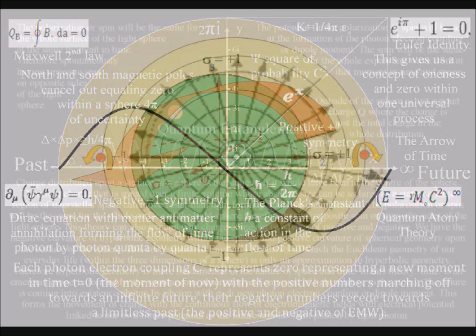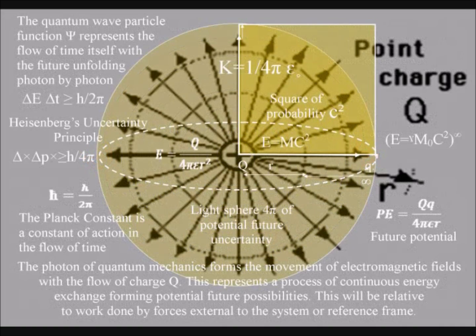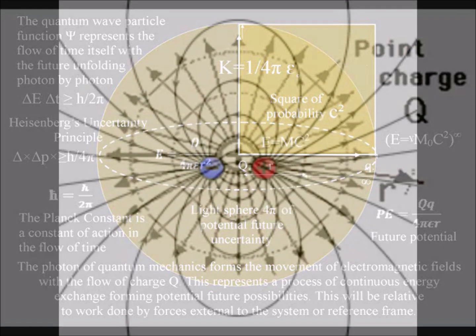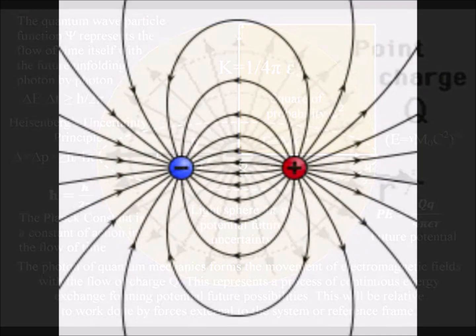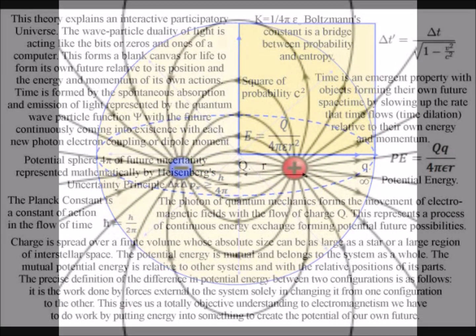For the photon polarization or spin will be the same for the whole surface of the sphere, having opposite spin on opposite sides of the light sphere. This is because of the nature of charge: a spherical charge will have the same charge at the center as it has on the outer surface. The light photon is the carrier of charge with the continuous flow of electromagnetic fields.